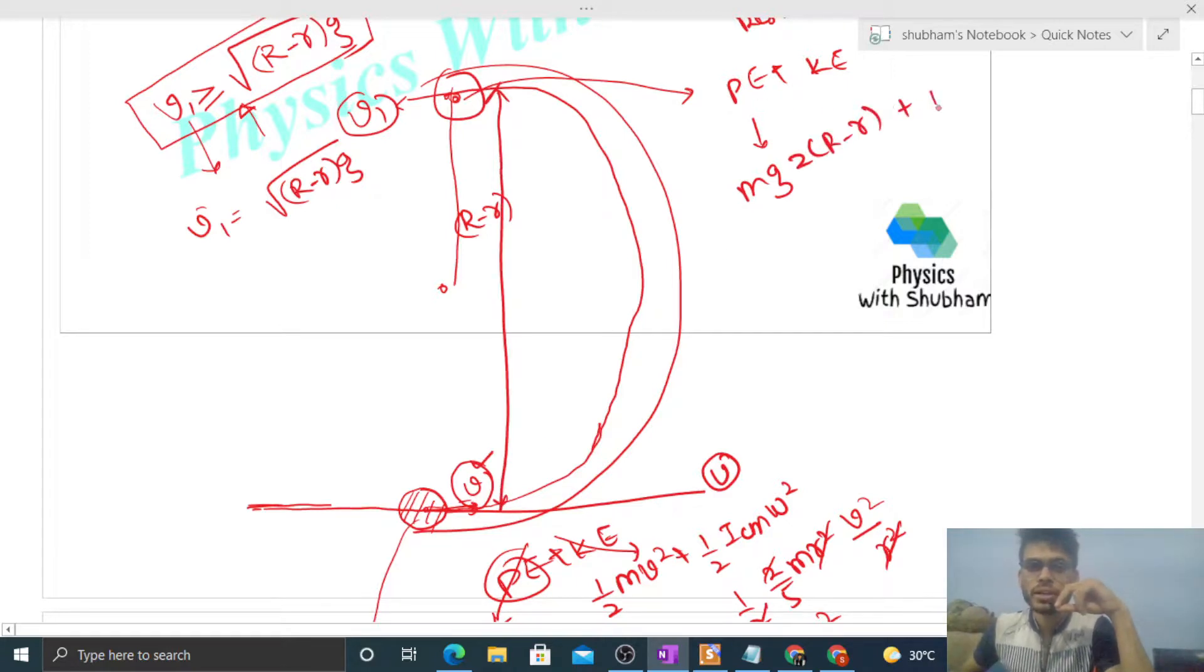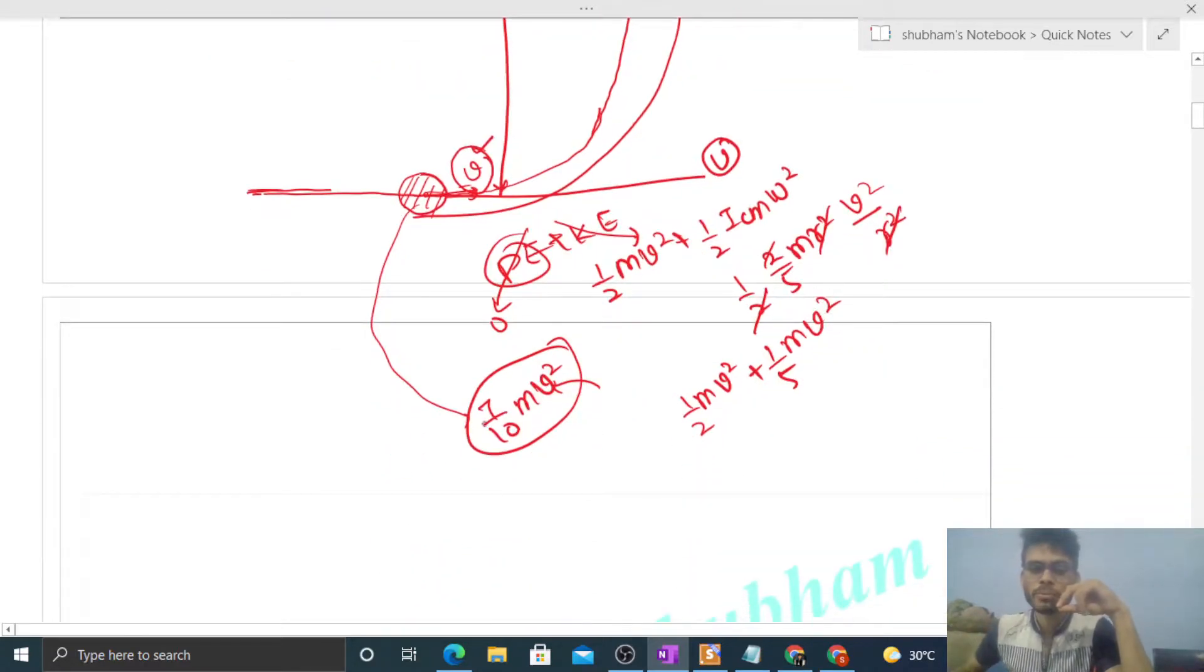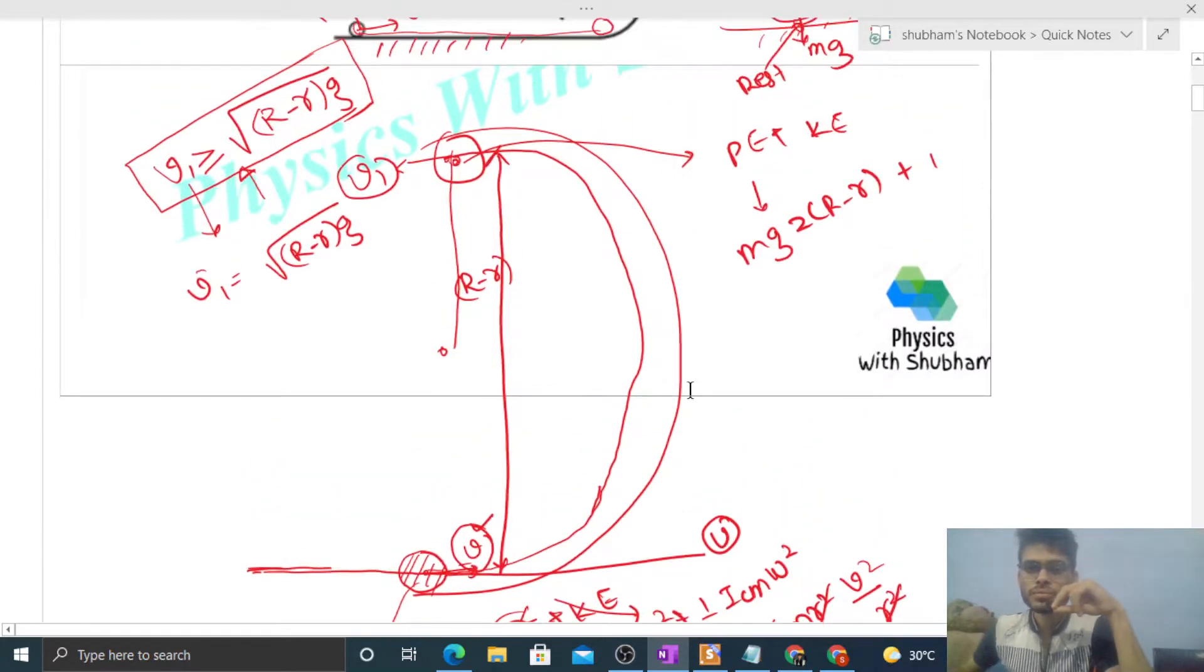Kinetic energy - see, kinetic energy of rolling sphere is 7 by 10 of m into v square, total, right? So 7 by 10 of m into - here what will be the speed? This is minimum speed, right? So capital R minus small r into g. So here what is the total energy? m into capital R minus small r into g, this is common, and this becomes 27 by 10. And equate this with this value.